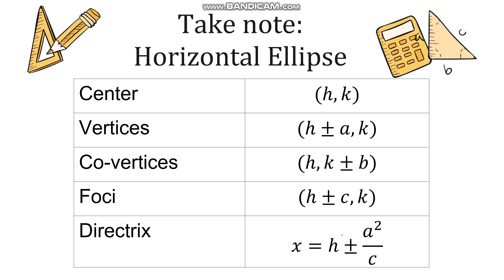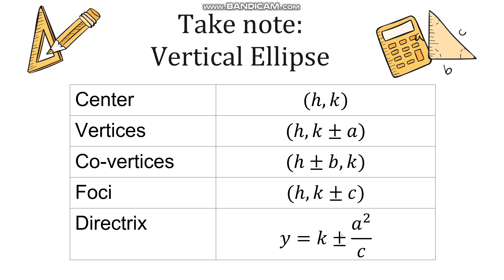For a vertical ellipse, the center is still (h, k), but for the vertices we add a to k since the movement is on the y-axis. For the co-vertices we add b to h with the same k. For the foci we add or subtract c to k, and for the directrix it is y = k ± a² / c. We use plus and minus because there are always two vertices, two co-vertices, two foci, and two directrices on opposite sides of the ellipse.